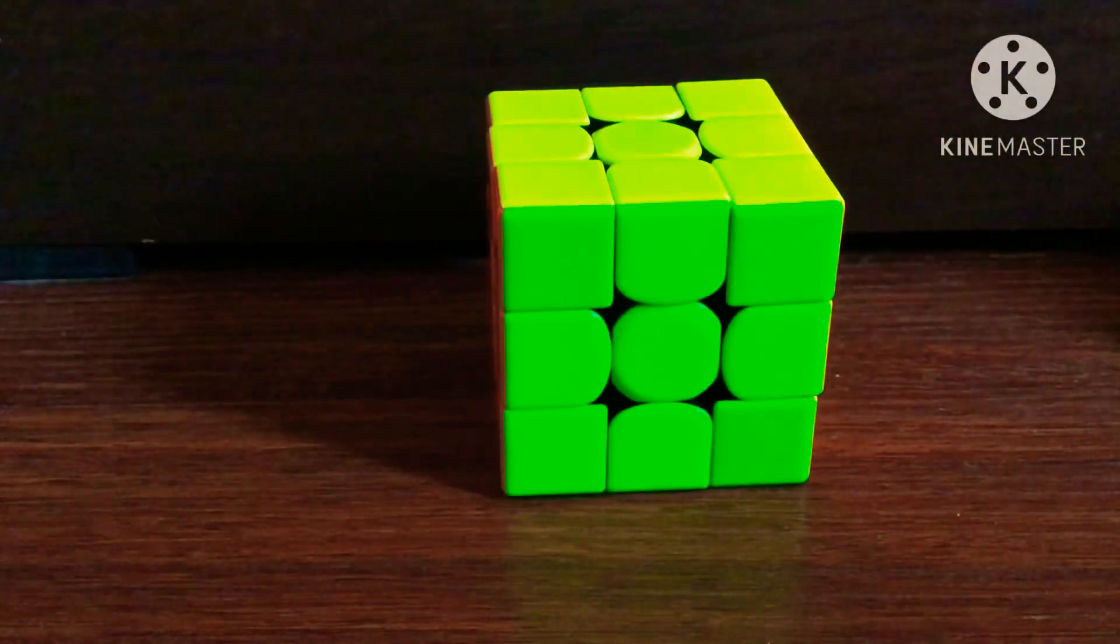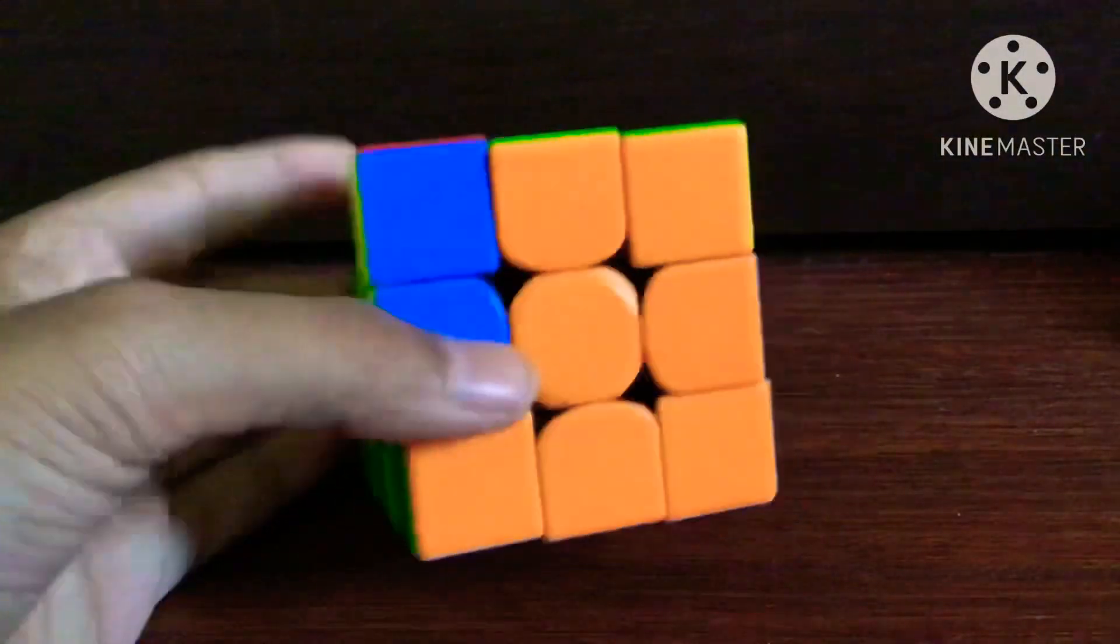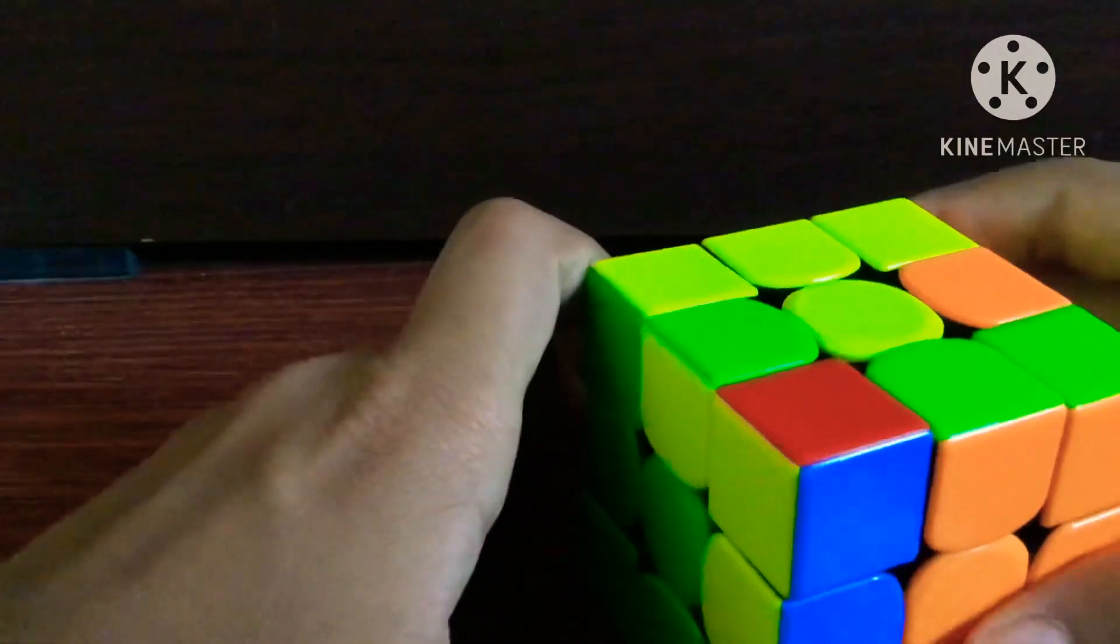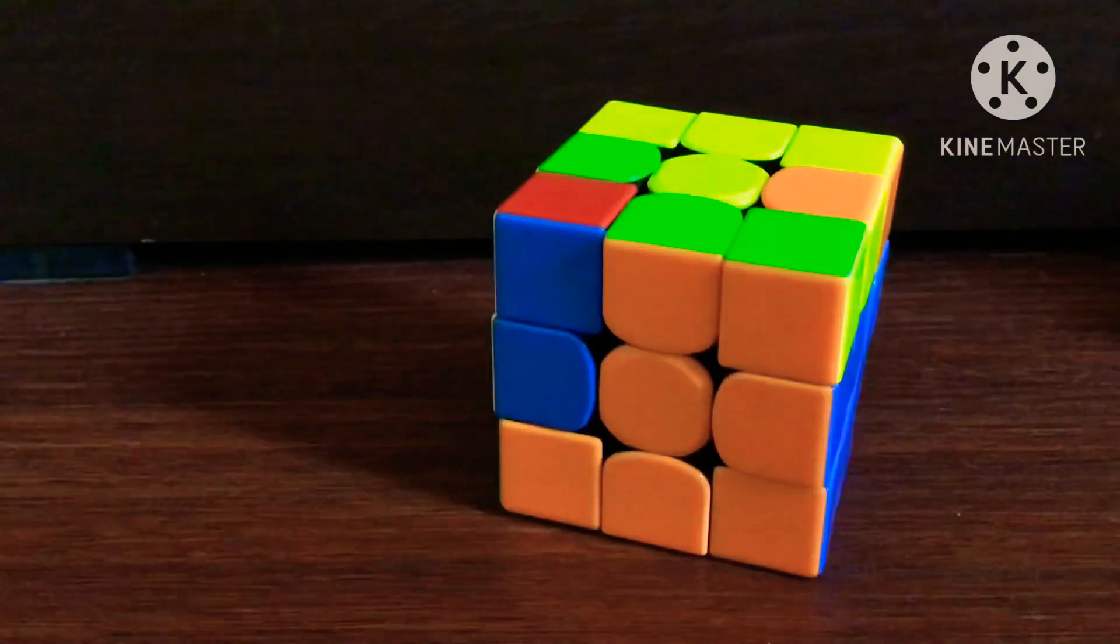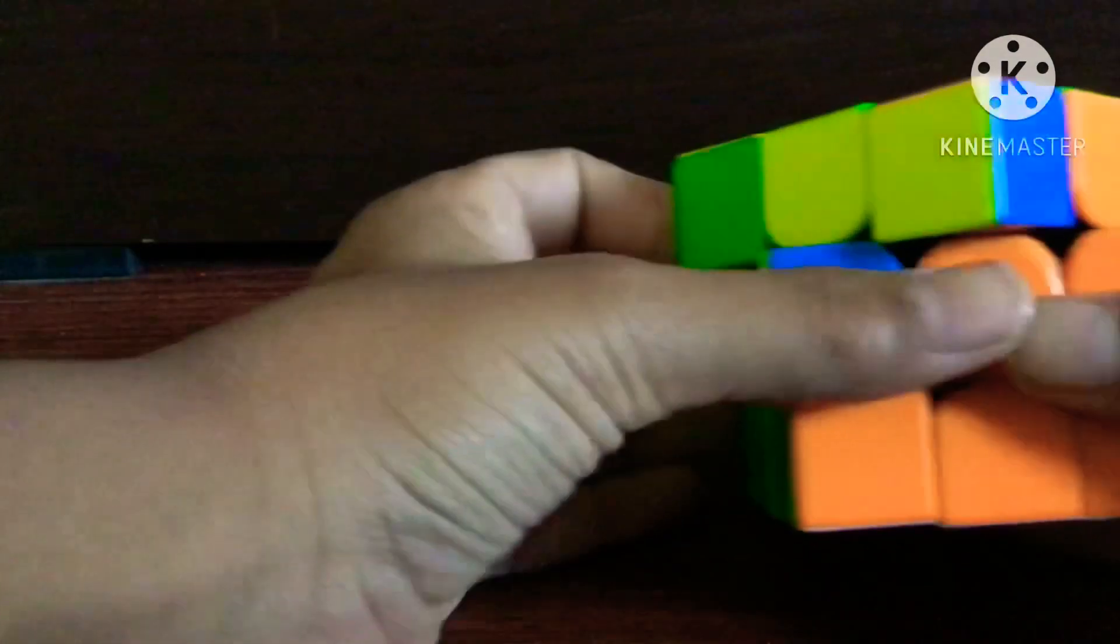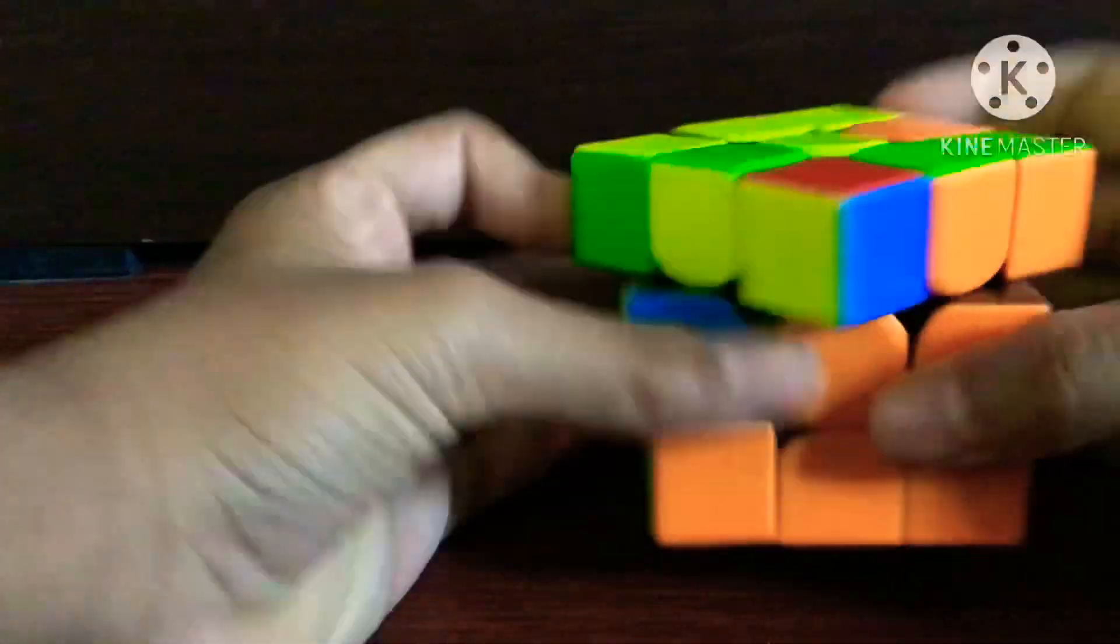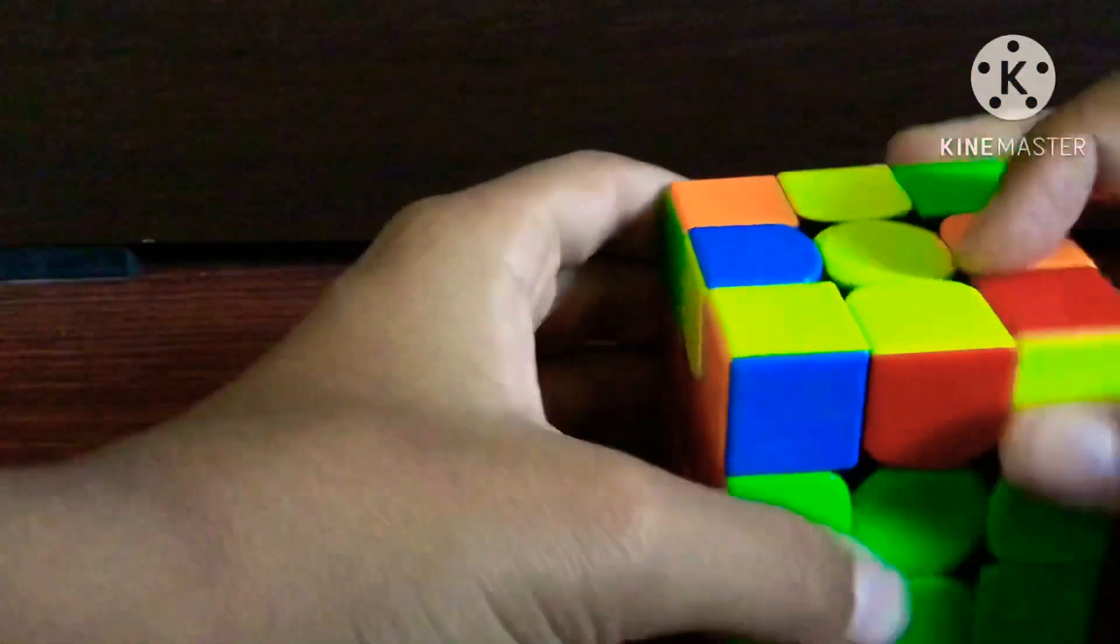That was the last case. There are a few cases which I haven't covered in this video, and there is no algorithm that I know. If I figure out any algorithm, I'll make a part two of this. Anyway, this is a series, so if you get any dot case, just do the beginners method.